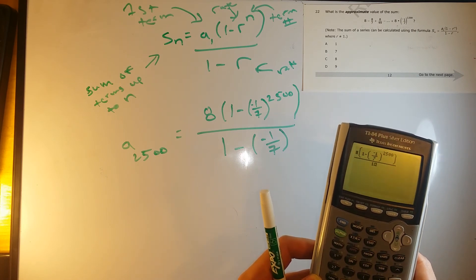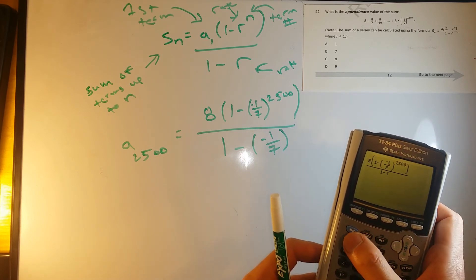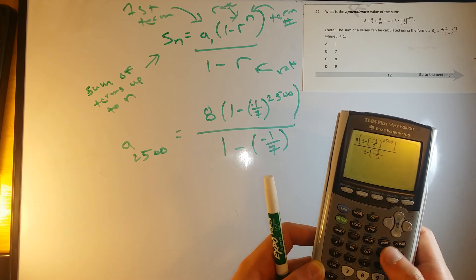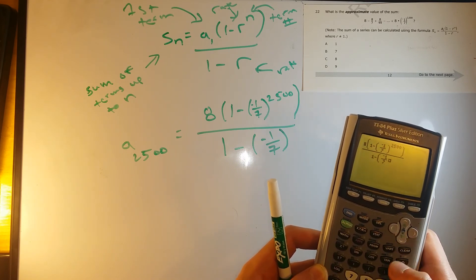That's up top and then the bottom, 1 minus, and I'll do negative 1 over 7, negative 1 over 7.